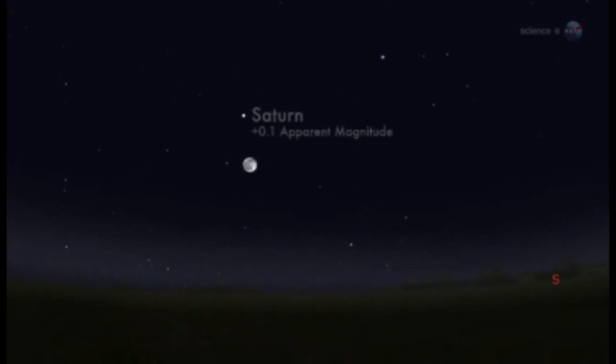To the naked eye, Saturn at opposition is about twice as bright as a first magnitude star. This makes it relatively easy to find.